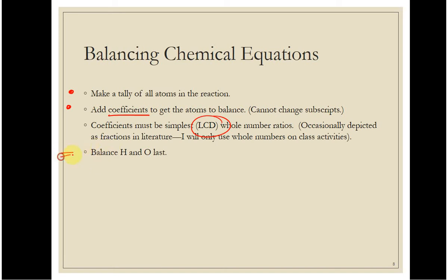Just as a big tip: balance hydrogen and oxygen last. In the last example, oxygen was in more than one molecule, which makes it kind of hard to balance at the beginning. It's just easiest if you start with everything else and end with hydrogen and oxygen.